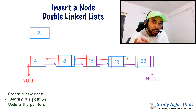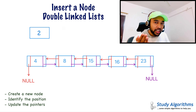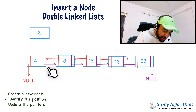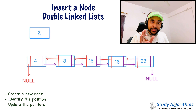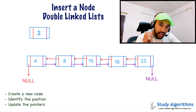Hello friends, welcome back to Study Algorithms, a place where I make programming fun and easy to learn. Here is what we are going to do today. First, I will tell you how you can insert a node in a doubly linked list at three places: at the beginning, at the end, and in the middle. Next, I will show you how you can delete a node from all three of those places, followed by a dry run of the code. Without further ado, let's get started.